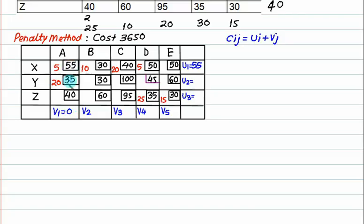Next occupied cell has cost 35, U value is 0, so V equals 35. Next occupied cell: cost is 30, row value is 55, so this column value is minus 25. No occupancy in the next position. Next occupied cell: cost 40, row value 55, so column value is minus 50 — wait, let me recheck: cost 50, row value 55, so column value minus 5. Next: cost 35, column value minus 5, so row value 40. Next: cost 30, row value 40, column value minus 10.